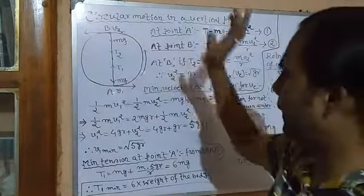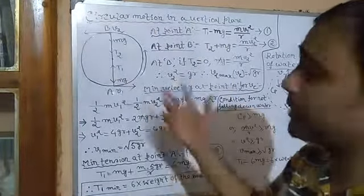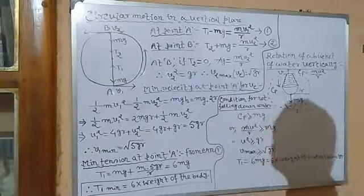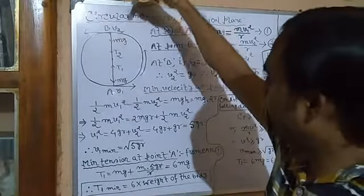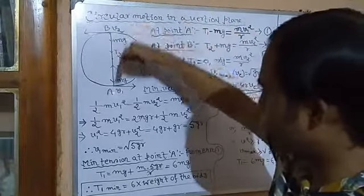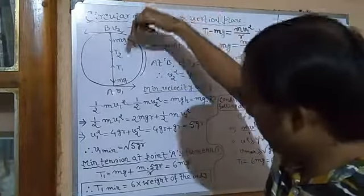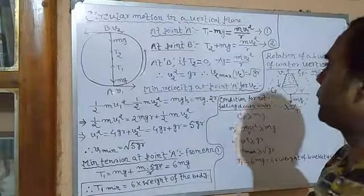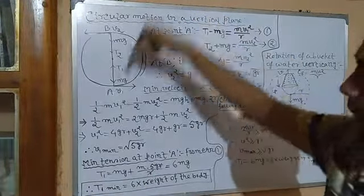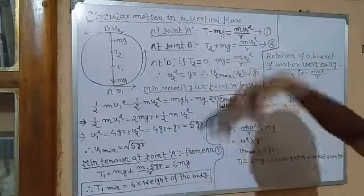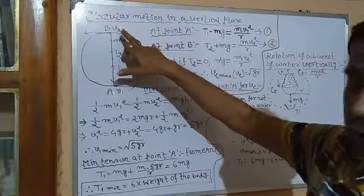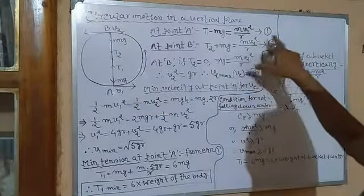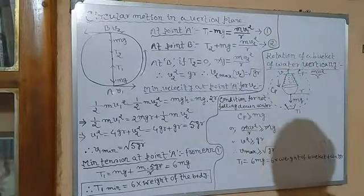At point B, the velocity is V2, which is slightly less than V1, and tension is T2, which is also slightly less. At point B, tension T2 acts toward the center, and weight mg also acts in the same direction as T2. So the net force T2 + mg provides the necessary centripetal force: T2 + mg = mv2²/R, where V2 is the velocity at point B. This is equation 2.